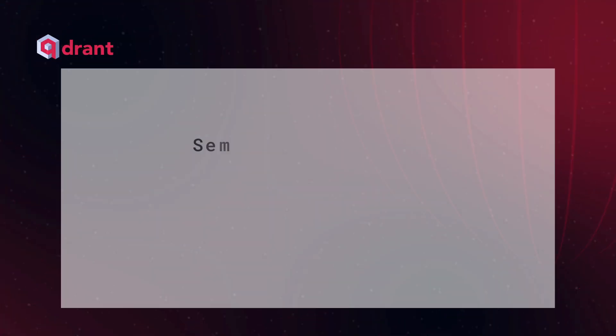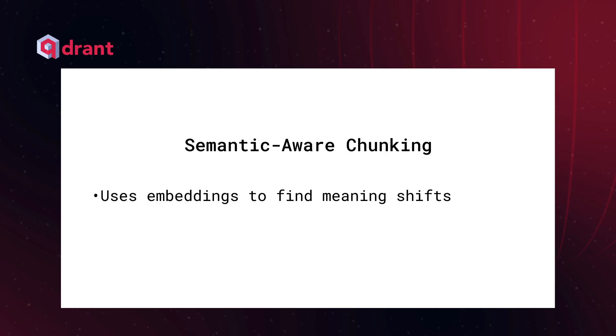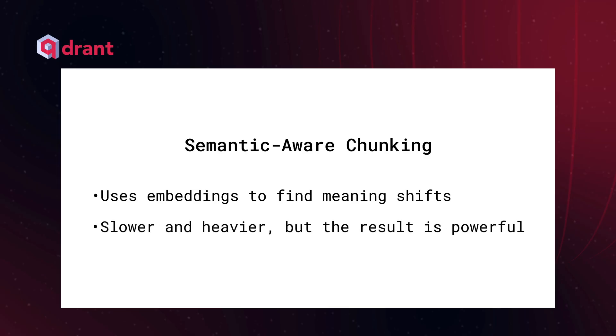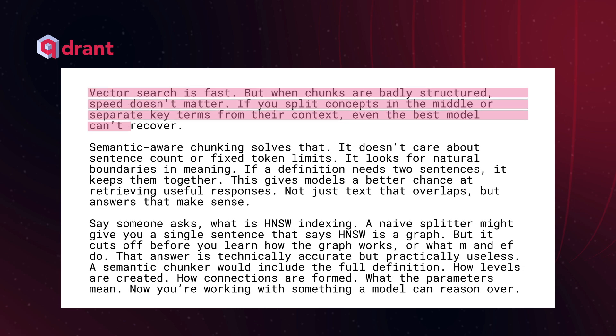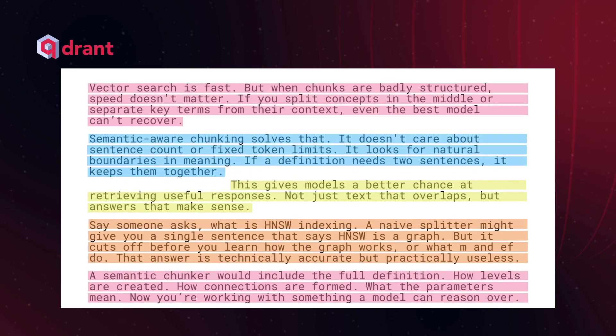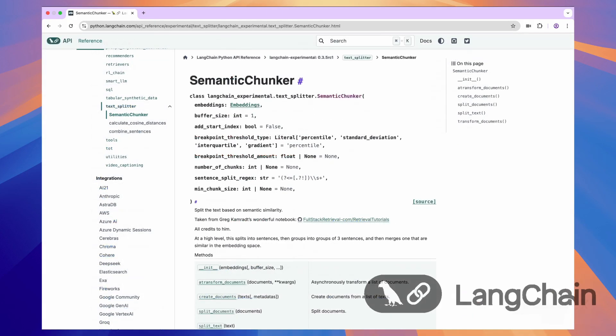Everything up to this point was about structure, but structure is not the same thing as meaning. Just because two sentences or paragraphs appear next to each other doesn't mean they are relating to similar things. Semantic chunking uses embeddings to find meaning shifts — you detect where topics or semantic coherence change and you break there. The trade-off is cost, because you're embedding the full document upfront just to decide where to split it. This is the slower and heavier method, but it is also the most powerful because it's the one most likely to guarantee that each chunk will contain a coherent idea. This is available in LlamaIndex with the semantic splitter node parser and in LangChain with the semantic chunker. You won't always need something as powerful as semantic chunking, but it's very useful when accuracy is critical and you don't care too much about performance or cost.